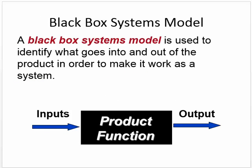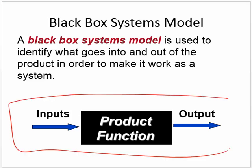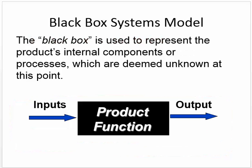The black box system model. A black box systems model is used to identify what goes into and out of the product in order to make it work as a system. So this is what we're talking about right here. This is the black box model. There's some type of input. The product does its thing, and this is what happens because of that. The black box is used to represent the product's internal components or process, which are deemed unknown at this point.